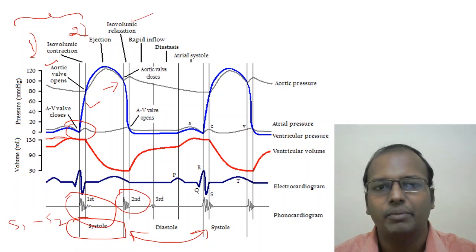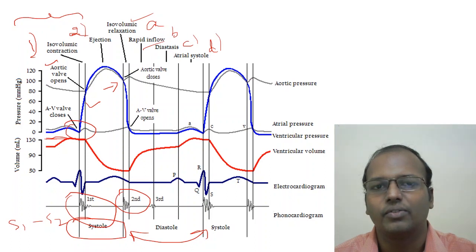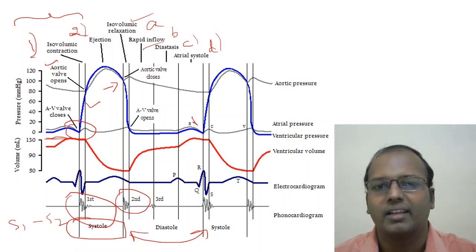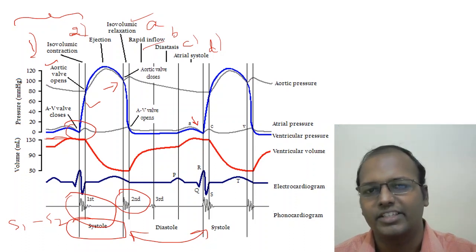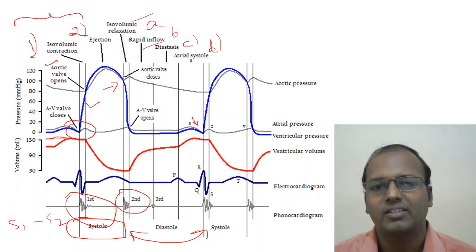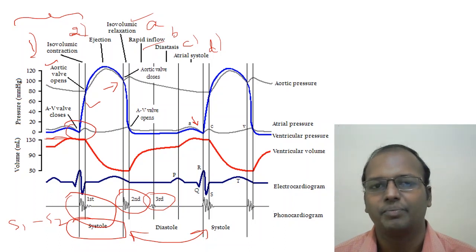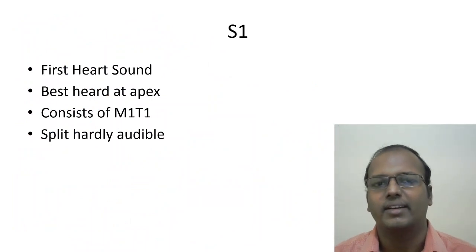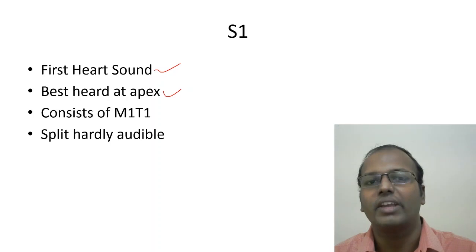Diastole proceeds through: isovolumetric relaxation, rapid inflow, diastasis, and atrial systole, after which the cycle restarts with AV valve closure. The third heart sound (S3) occurs during the rapid filling phase of diastole. S1 is also called the first heart sound, best heard at the apex, and consists of M1 (mitral) and T1 (tricuspid) components.